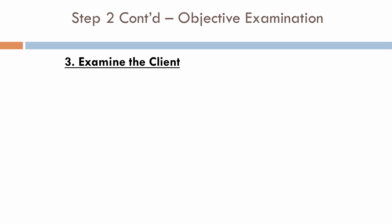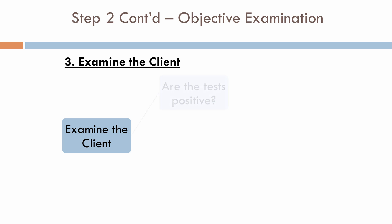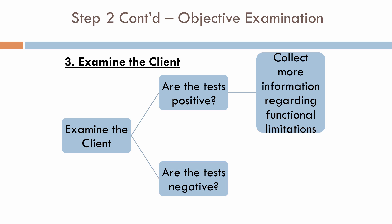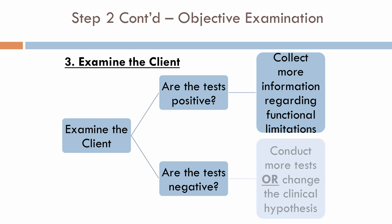The third part of the objective examination is to actually examine the client. Carry out the most common tests first to confirm or refute your clinical impression. If these tests are positive, more information can be collected regarding functional limitations and impairments. If the tests are negative, the therapist will decide whether to conduct more tests or change their clinical hypothesis.